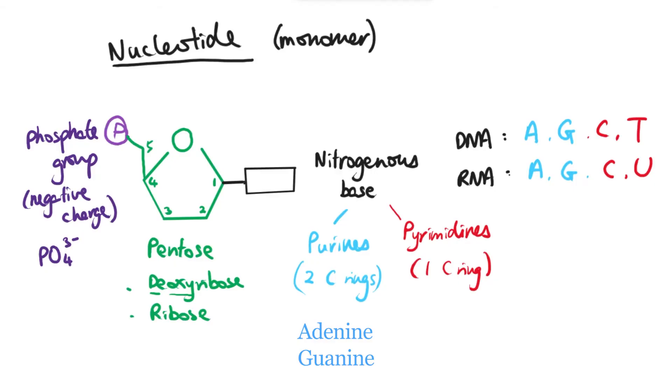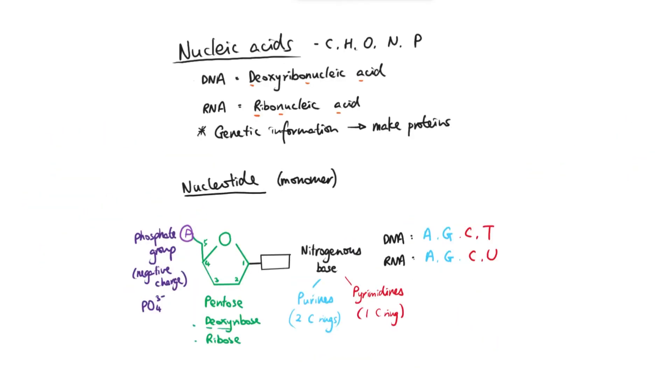So uracil replaces thymine as a base in RNA. So we've got two purines, adenine and guanine, and we've got three types of pyrimidines: cytosine, thymine, and uracil. And depending on if the nucleotide is DNA or RNA, then they can have AGCT or AGCU.